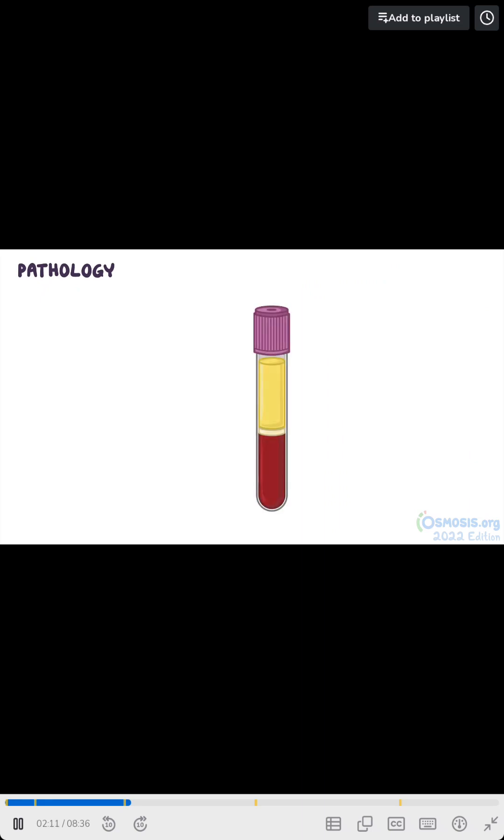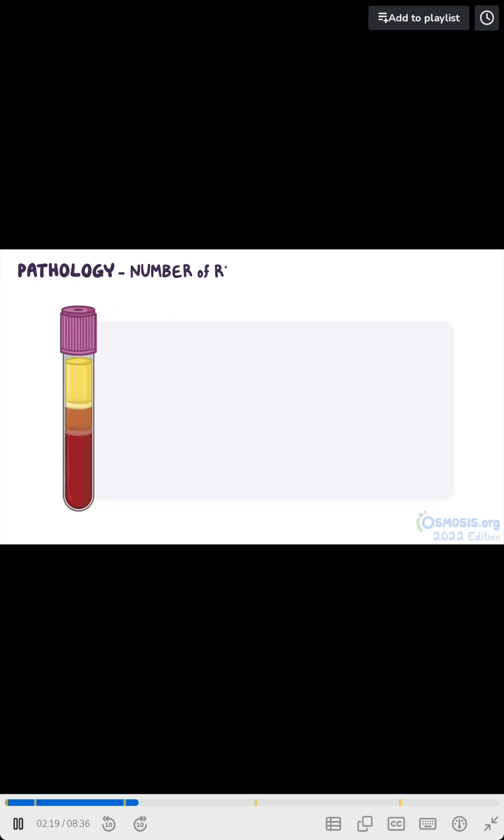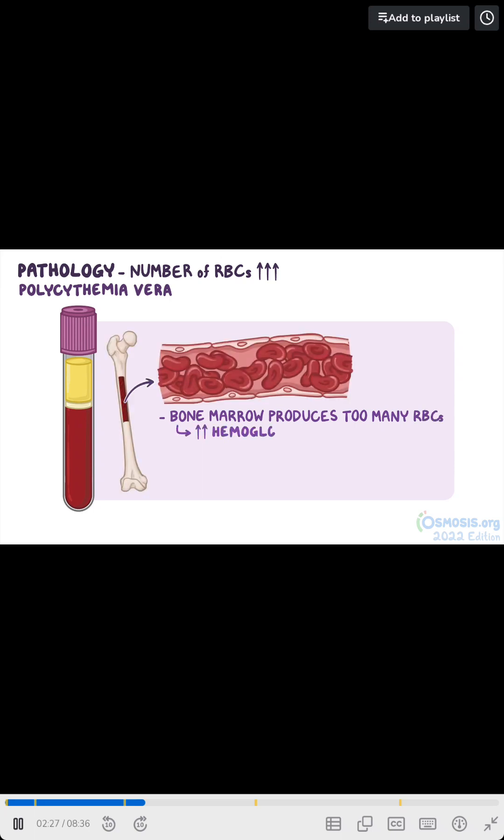There are certain conditions that can alter a client's hemoglobin and hematocrit. When the number of RBCs increases, like in polycythemia vera, a condition where the bone marrow produces too many RBCs, hemoglobin also increases. These additional cells also increase the percentage of RBCs, which means that the hematocrit will go up as well.